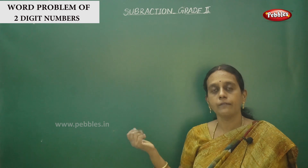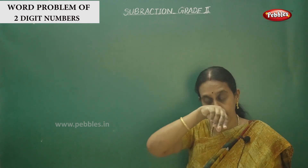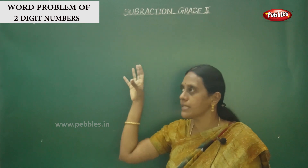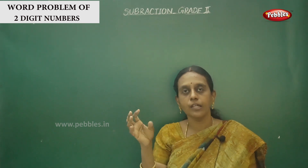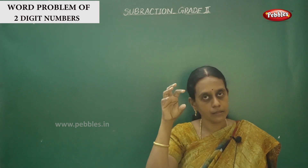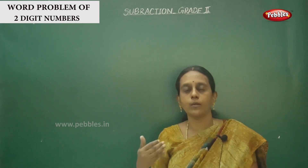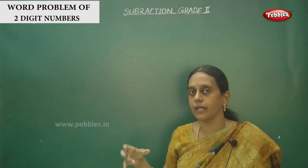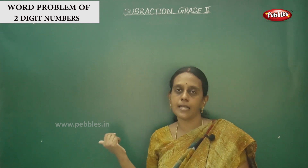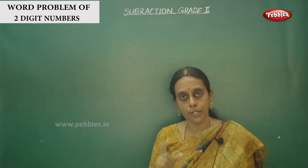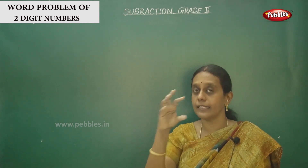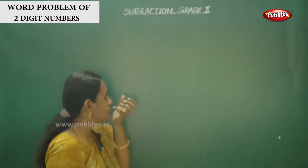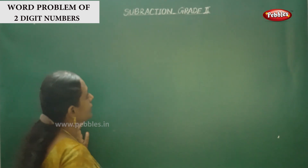Okay children, let me show a word problem using two digit numbers — that is a story problem. Whether it is called a word problem, statement problem, or story problem, the method is the same: you have to write down the statement, arrange the numbers in the correct order, do the calculation, and find out the final answer. That's the step-by-step way of solving a story problem. Observe the question I am going to write.